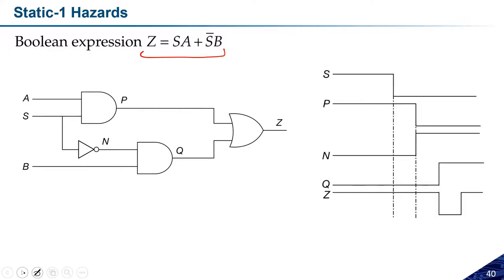Now let us check the timing diagram of this circuit. I am keeping A at logic 1 and B at logic 1. Initially S was logic 1. So P = A·S = 1·1 = 1. N (the output of the inverter on S) will be 0. Q = N·B = 0·1 = 0. And Z = P OR Q = 1 OR 0 = 1. This is the logical analysis without considering delay.